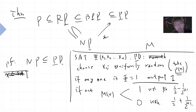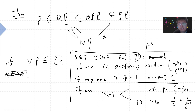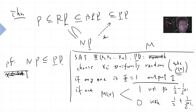So we've proved that NP is a subset of PP. This means PP is not an ideal class for a real computer, because you cannot distinguish probabilities that are only slightly above or below half.